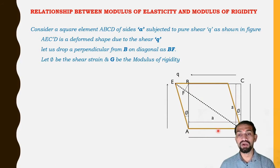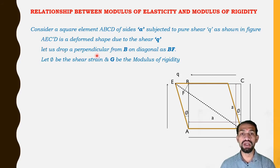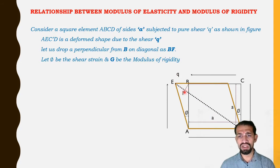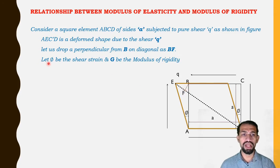To analyze the deformation, drop a perpendicular from B onto the diagonal DE, labeled BF. Let φ be the shear strain and G be the modulus of rigidity.